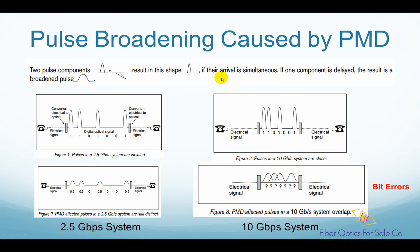So what kind of effect does PMD have on a high-speed fiber optic communication system? The main effect PMD causes is called pulse broadening. If there is no PMD in the fiber, these two orthogonal polarization modes arrive at the same time, and when added together you get the same pulse as the original input. But if there is PMD, these two modes will arrive at different times. When they are added together, you get a pulse that is broadened in time but with a lower peak power, as shown here.